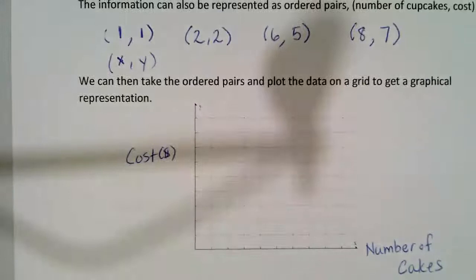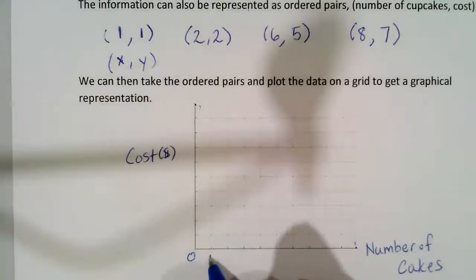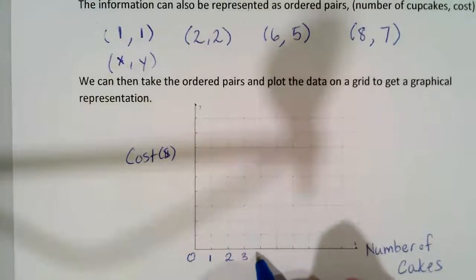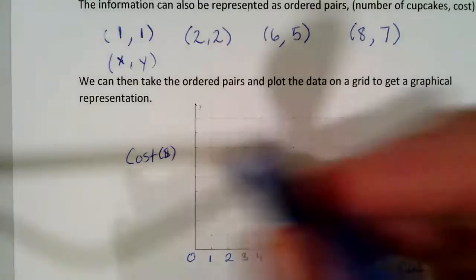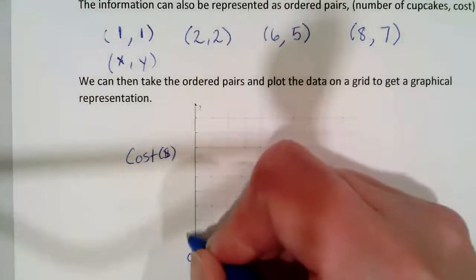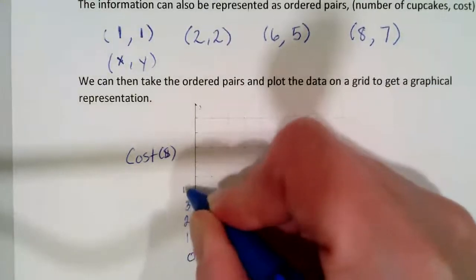And what we can do then is we can introduce a scale. So I'm going to go up by one. So I'm going to label this. My numbers are going to go from zero to eight. And on the vertical scale, my numbers are going to go from zero to eight as well, using a scale of one.